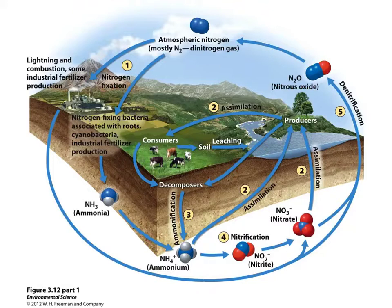We get our nitrogen from the plants that we eat, or the animals that we eat that ate those plants. Plants are able to get nitrogen from the soil, but there's kind of a catch. You may know that nitrogen gas is the most abundant gas in our atmosphere, but plants can't use nitrogen in that form — they can't use nitrogen gas.